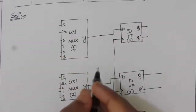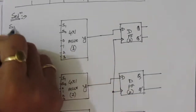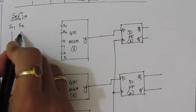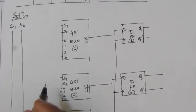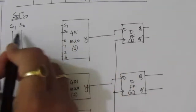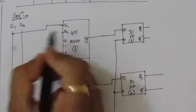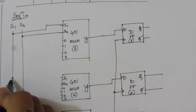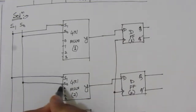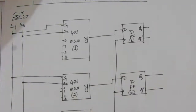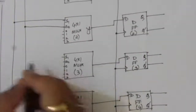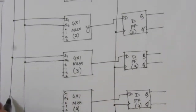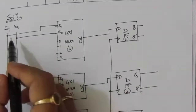Here we have common selection lines S1 and S0. We connect the S1 line to the S1 input and the S0 line to the S0 input for all multiplexers. The selection lines are thus connected to the respective inputs of all four multiplexers.